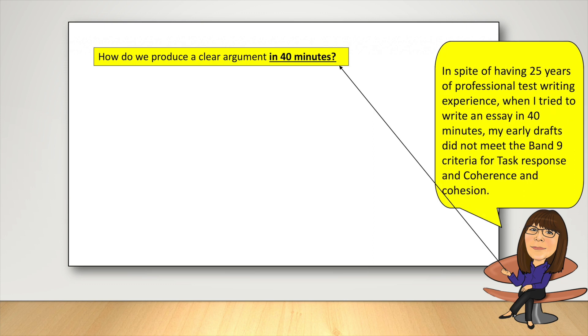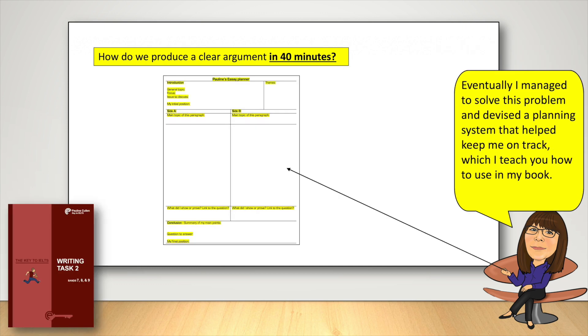In spite of having 25 years of professional test writing experience, when I tried to write an essay in 40 minutes, my early drafts did not meet the band 9 criteria for task response and coherence and cohesion. Eventually, I managed to solve this problem and devised a planning system that helped keep me on track, which I teach you how to use in my book.